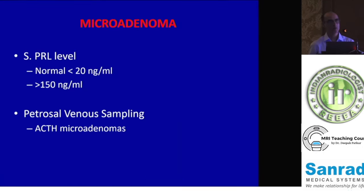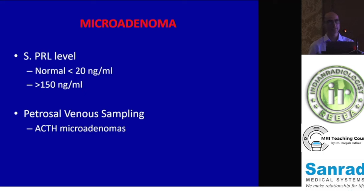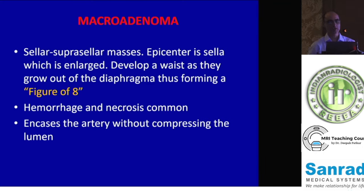When looking at microadenomas, many times patients present with prolactin levels of just 50–60, which is generally not a setting for microadenomas. If there is a prolactin-secreting microadenoma, levels are typically more than 120–150 nanogram per ml, the normal being less than 20. Many times if we cannot pick up a microadenoma — especially an ACTH-secreting one — the patient may have to undergo petrosal venous sampling to identify which side of the pituitary is secreting, and then a surgical excision of that half of the pituitary to remove the microadenoma.